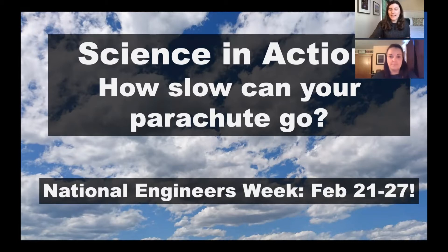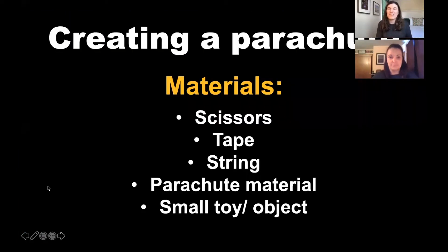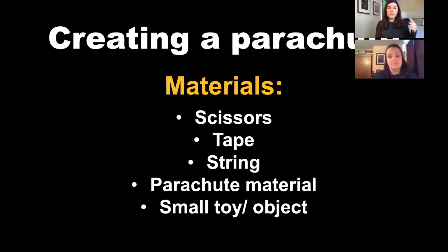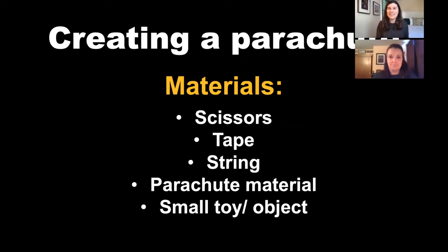Now for this activity, if you would like to join along and make your own parachute, you don't really need that many materials. These are just an example of materials that you could use. You could pause this video now and go look for some of these materials and come back and start playing again. If you don't have every single one of these materials, you're more than welcome to experiment and see what else would work. When I say parachute material, that means something like cloth, plastic, paper, or aluminum foil.